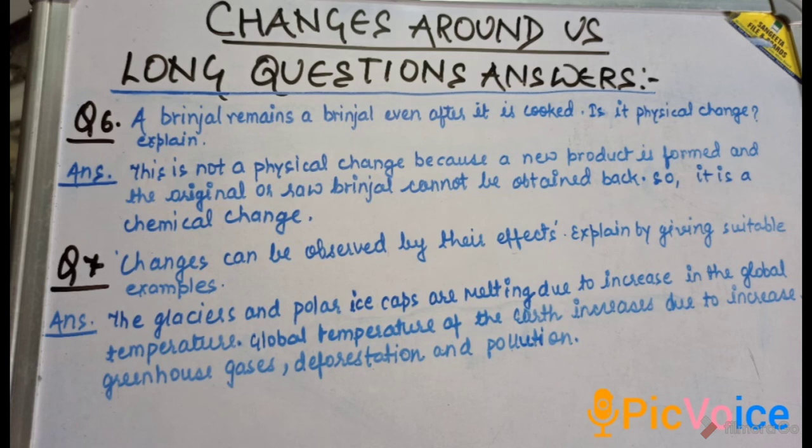Global temperature increases due to increase in greenhouse gases like carbon dioxide and methane, deforestation and pollution. This leads to global warming. Global warming is the rise in temperature of the earth's surface due to increase in greenhouse gases, deforestation and pollution.